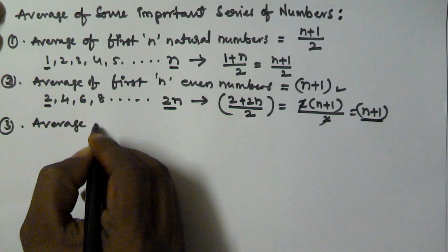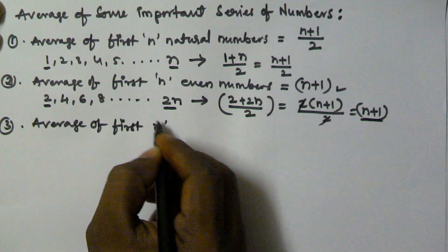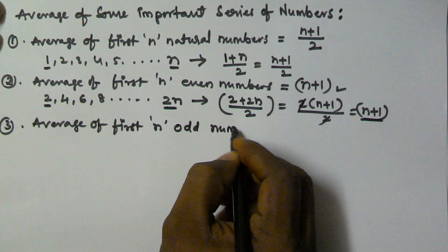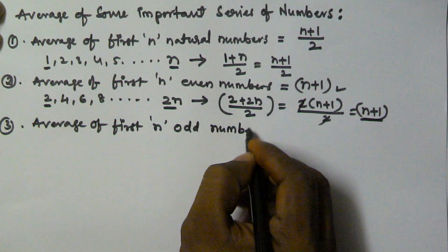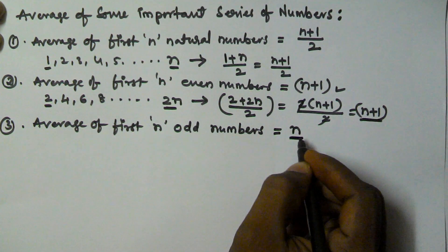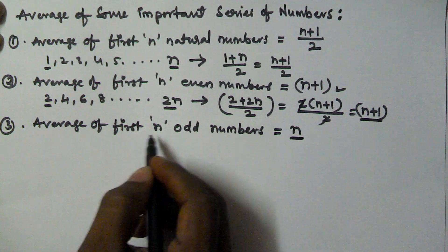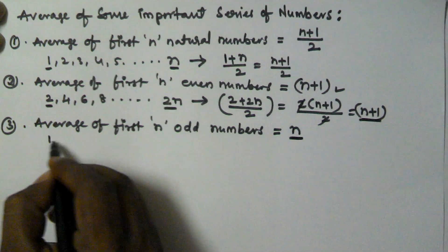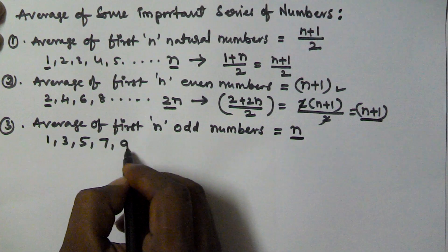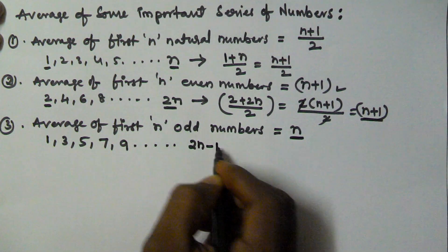The average of first n odd numbers is equal to n. Let's write the first n odd numbers: 1, 3, 5, 7, 9, and so on.